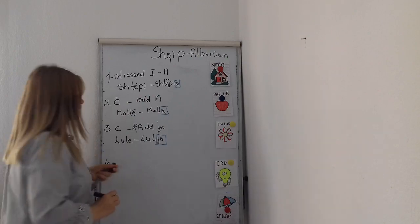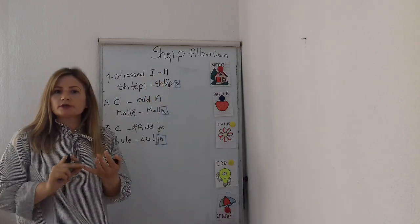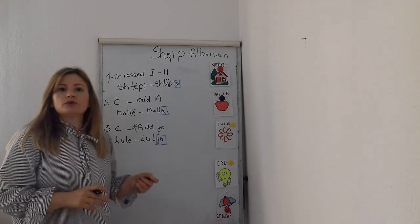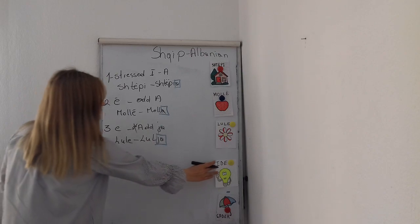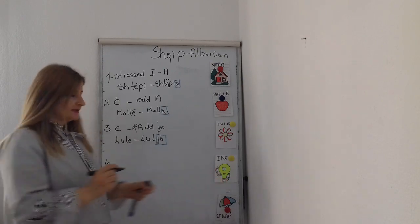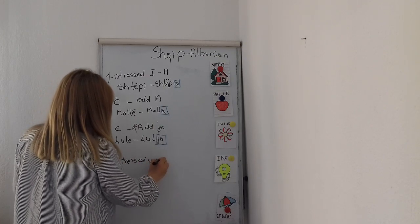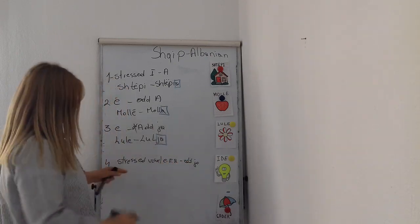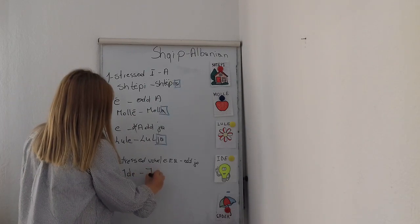The fourth rule: there are nouns which end in a stressed vowel except for the vowel Ë — for example, they end in a stressed A, E, or O. In this case, to make the definite form, we add JA without deleting any vowel at the end. For example, the word 'Ide' — Ide means 'idea.' It ends in a stressed E, so we add JA: 'Ideja.'